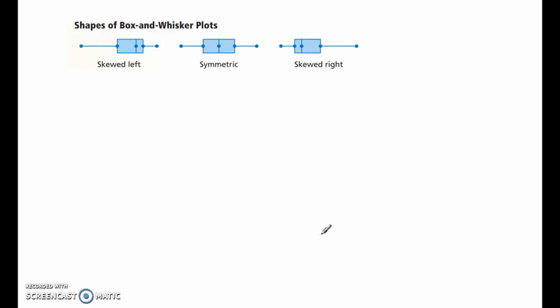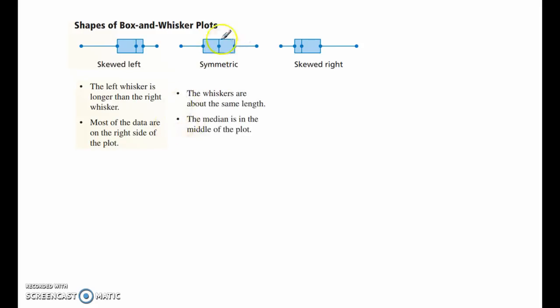All right, a couple more things, just looking at the shapes of box and whisker plots. If it's stretched out, we have a value that's really small. It's skewed towards this side. So the side that's stretched out is skewed. So, this is skewed to the left. This one is symmetric, where each part is the same length. The median is in the middle of the plot. And then skewed to the right means that the right whisker is longer than the left whisker. Most of the data are on the left side of the plot. So, if you look at this, the middle of the plot would be here. Most of the data are on the left side.